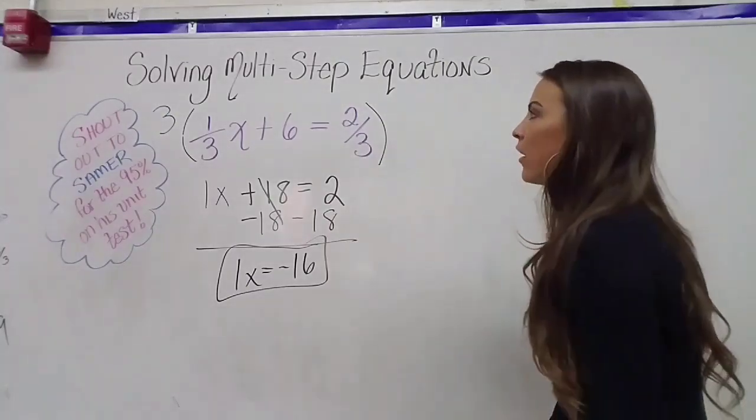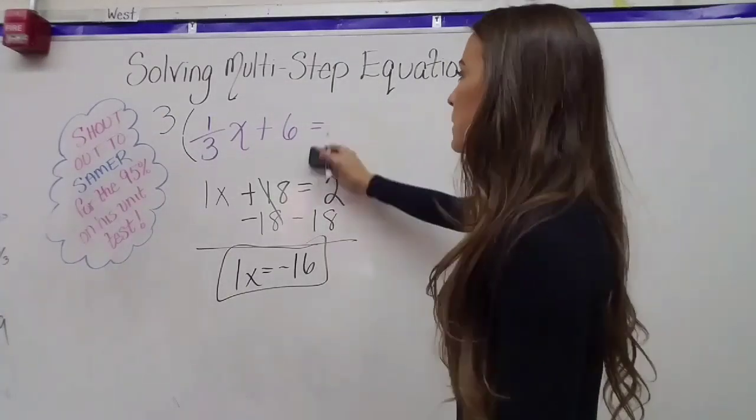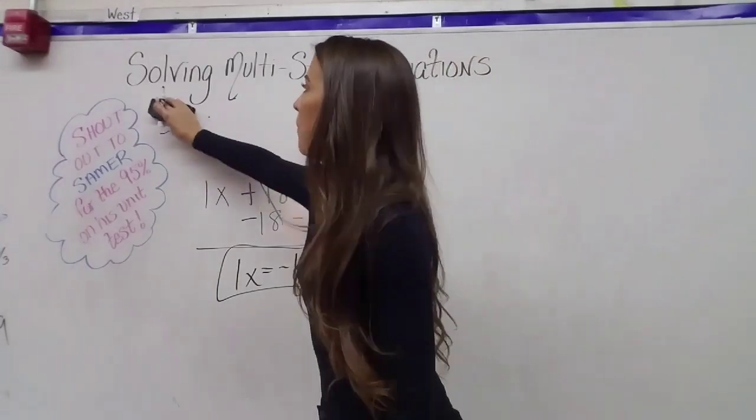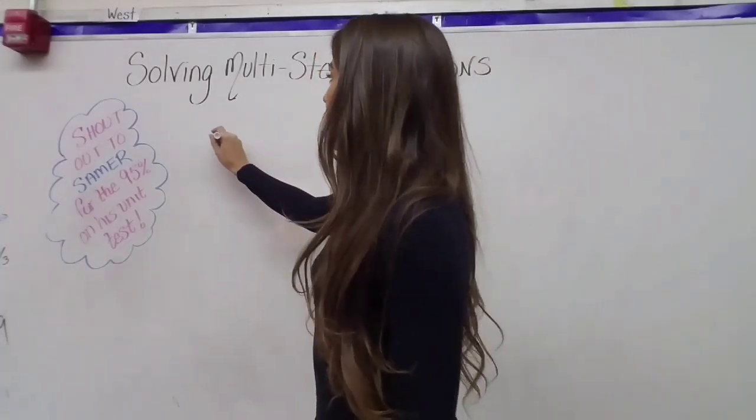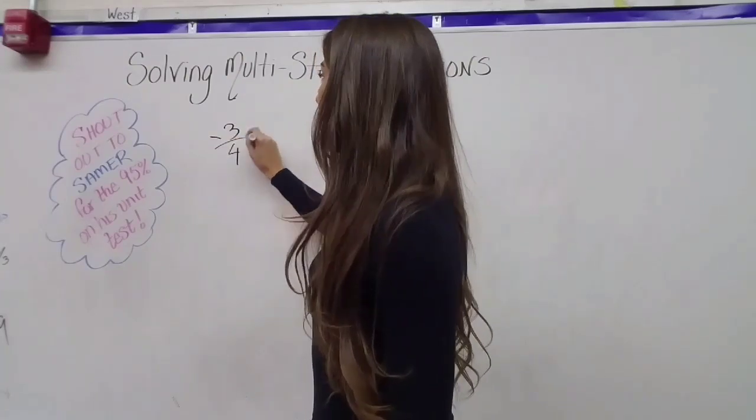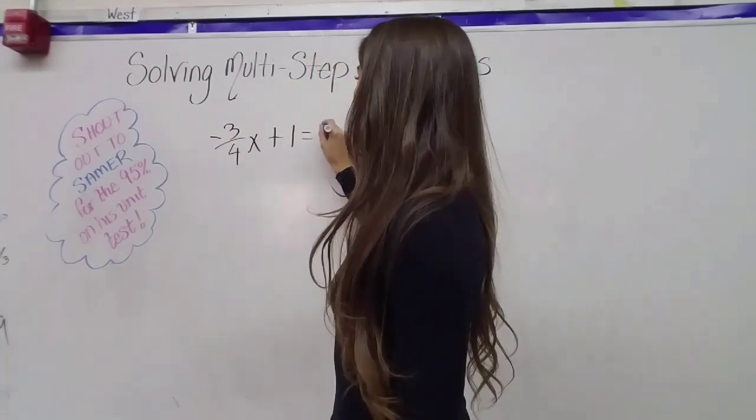Let's do an example where there are multiple fractions, but there's different denominators. So we'll figure out what to do there. So if we've got, for example, negative three-fourths x plus one equals two-thirds.